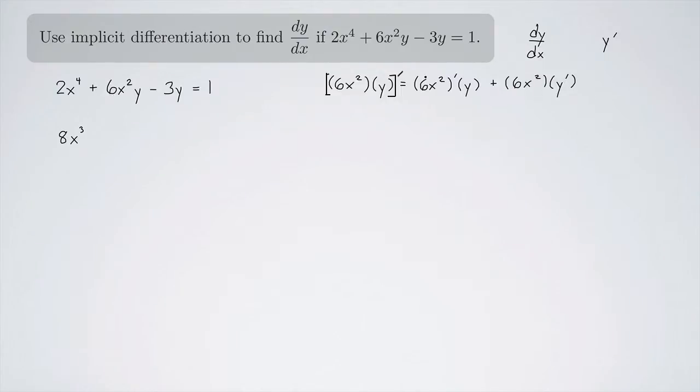So let's do that. First we have the derivative of 6x^2. That's going to be 12x. And then I'm going to leave the y alone, 12x times y. Plus, now I'm going to leave the 6x^2 alone and take the derivative of y. Well, that's just y prime.